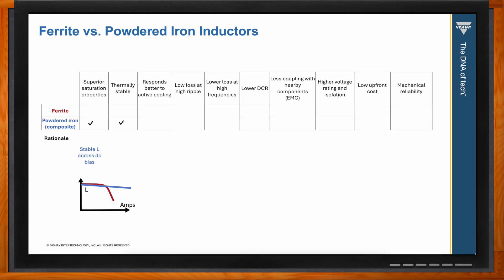Thermal stability is also greatest for composite inductors — the inductor saturation current rating at 25°C will be the same as at 125°C, whereas ferrites often require derating. Composites also respond better to active cooling provisions such as heat sinks and forced-air convection, due to the lower junction-to-case thermal resistance enabled by the thermally conductive molded iron body.